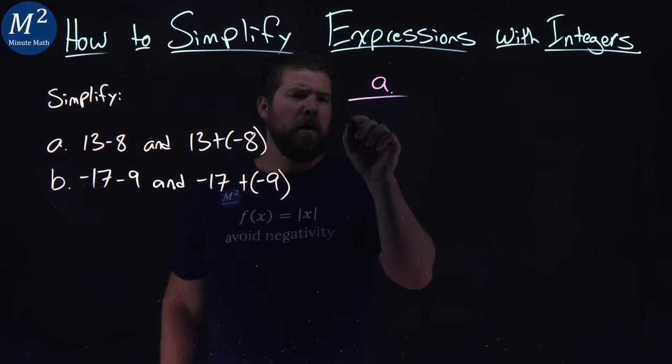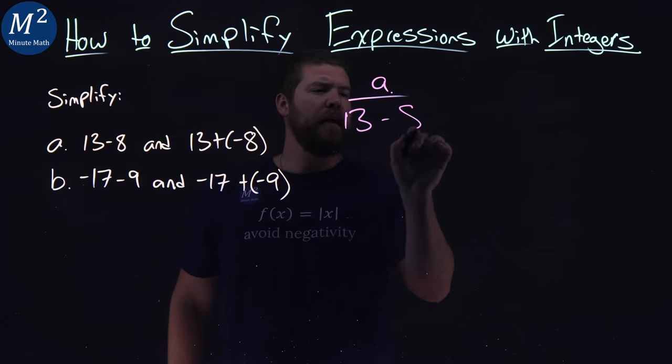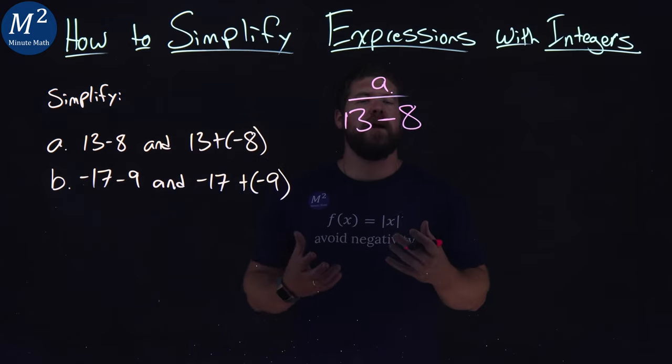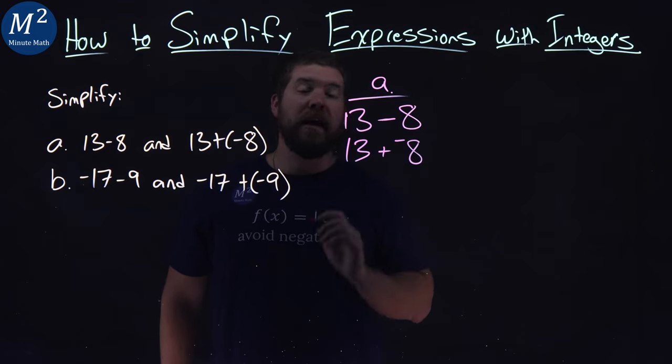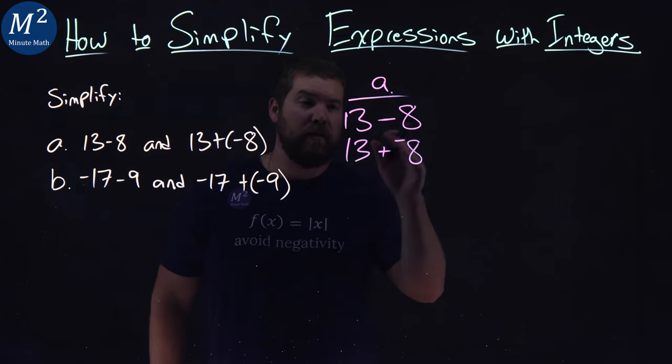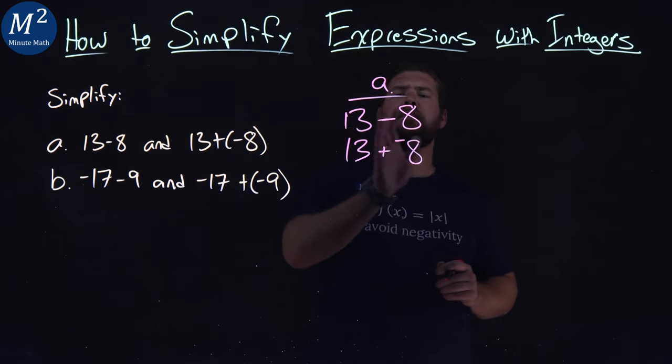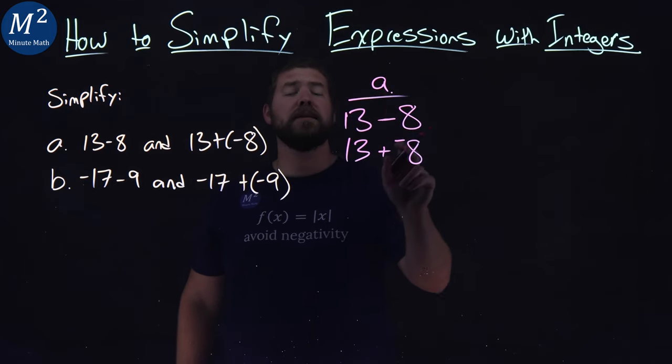How can it be? 13 minus 8. If I take away 8 from a number, it's the same thing as adding the negative of it. Two lines kind of go together there. So 13 minus 8 is the same thing as 13 plus negative 8.